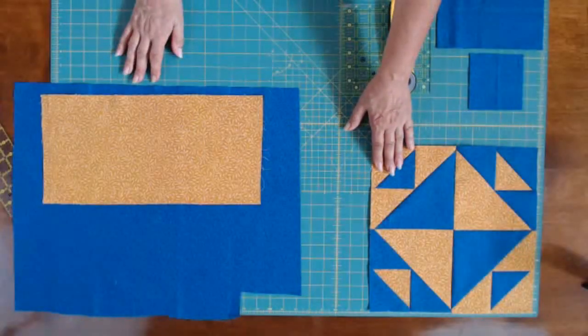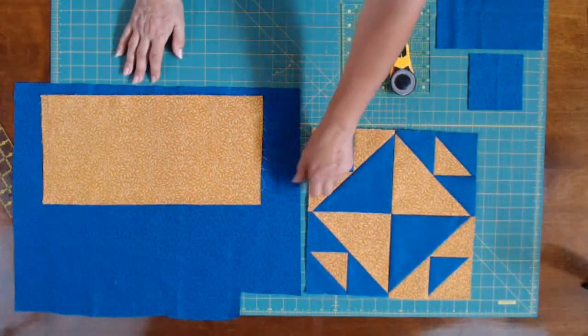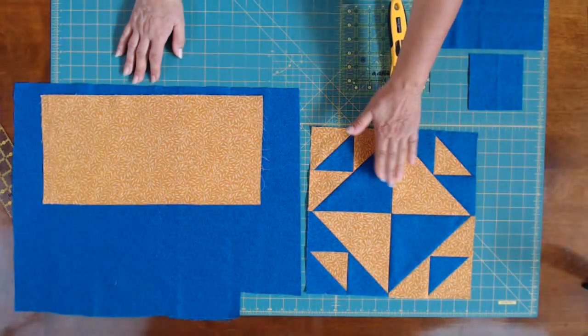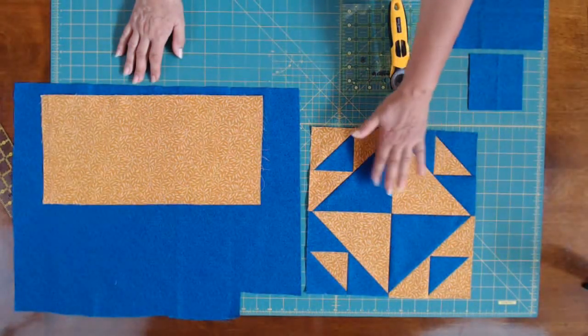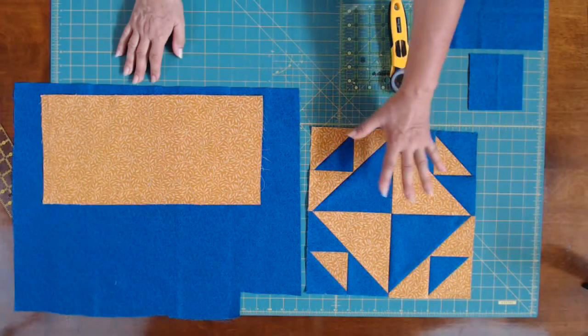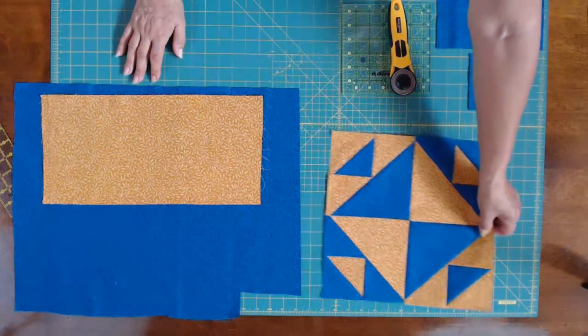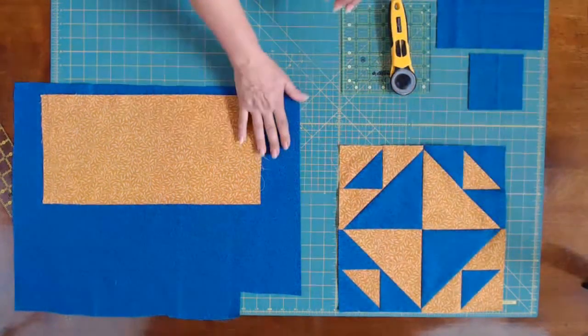This block comes from Quilters Cache. It's free for you to print and use. Now this block requires two contrasting fabrics. Here is the block and this is called Birds in the Air. You can see the two contrasting fabrics. If you don't get enough contrast between the two fabrics, you can't really see the pattern very well. So this is the two fabrics that I have chosen, the gold and the blue.